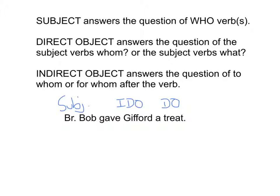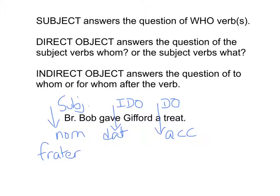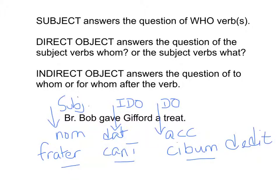Now look at the word treat. Can it be the direct object? Does it answer the question of what Brother Bob gives? Brother Bob gives what? Brother Bob gives a treat — yes, he is sending the treat away to Gifford. So, the treat is the direct object. Subjects are in the nominative case, indirect objects are in the dative case. So, Brother Bob — that's frater, nominative. Gifford is the indirect object, he's a dog, so that would be canis dative singular. And the treat — that would be the accusative of cibus, which is kibum. Frater, canis, kibum — and the verb is dedit.